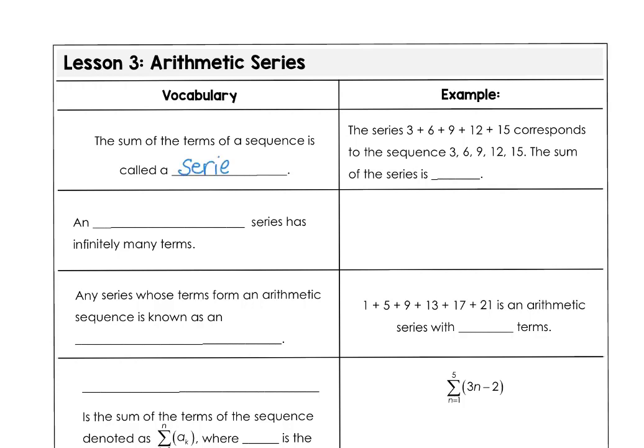You can see in our example the series 3 + 6 + 9 + 12 + 15 corresponds to the sequence 3, 6, 9, 12, 15. The difference between the sequence and the series is the sequence is the list with commas and the series is the sum of those terms. If we add the sum of the series, we're going to get 45.